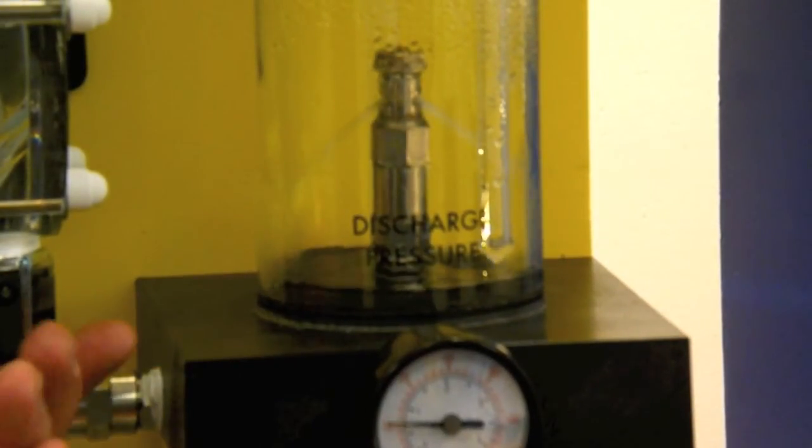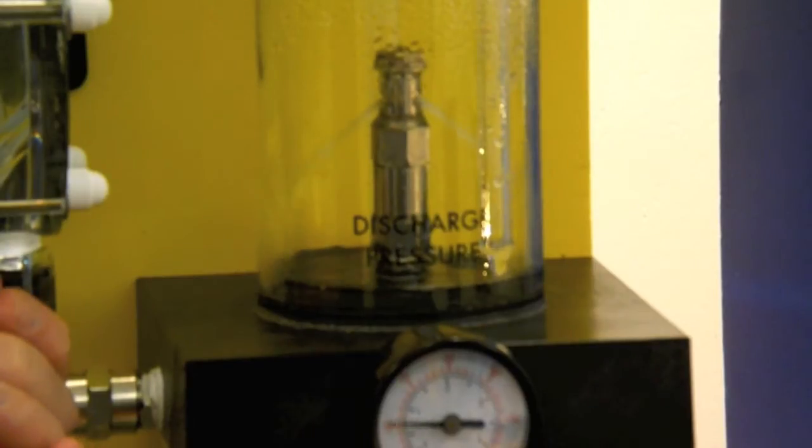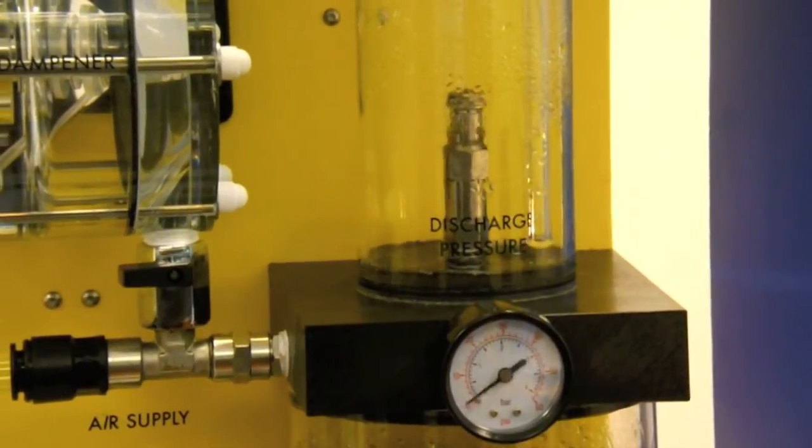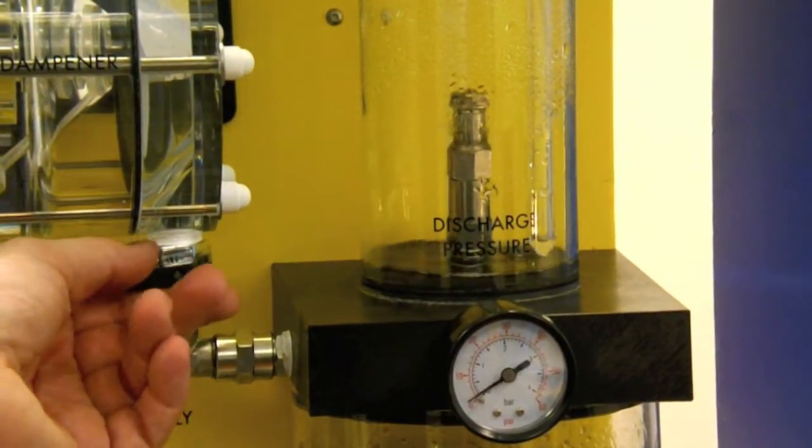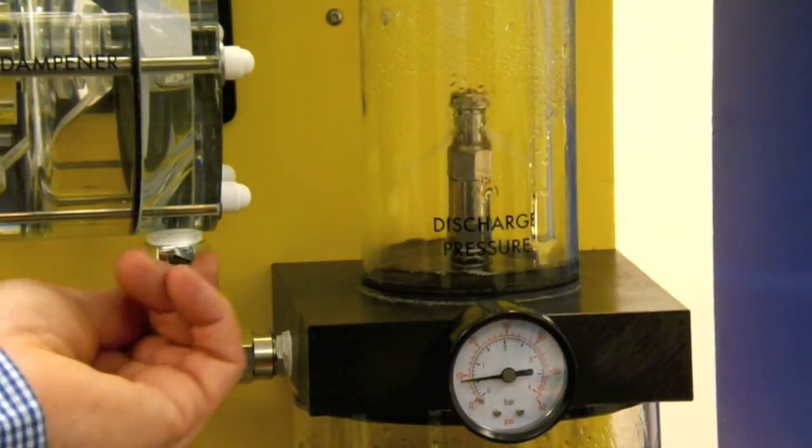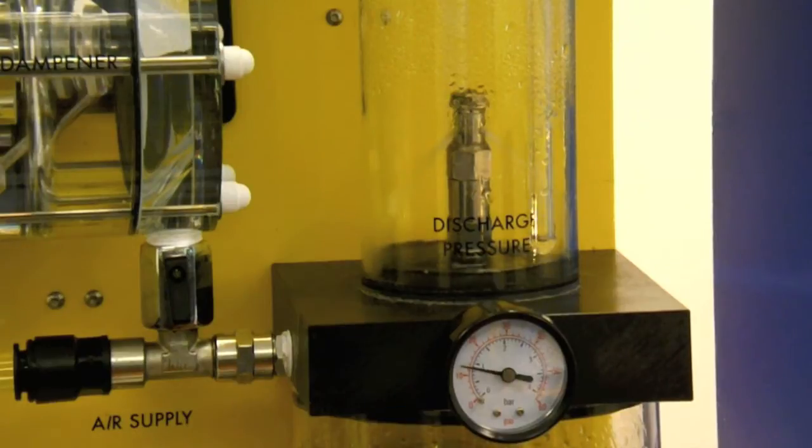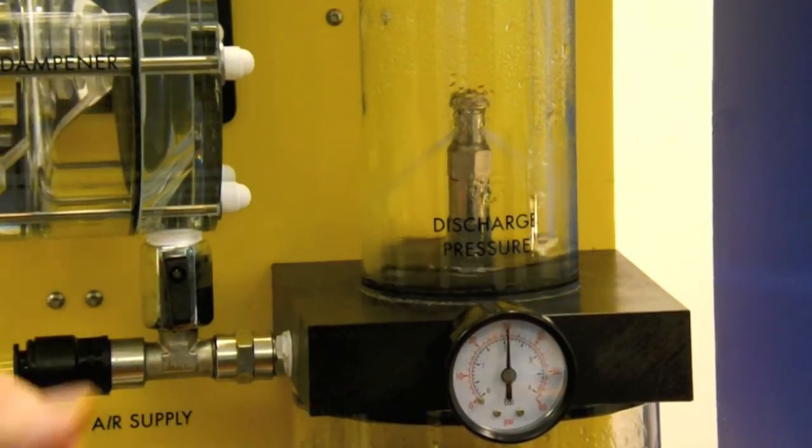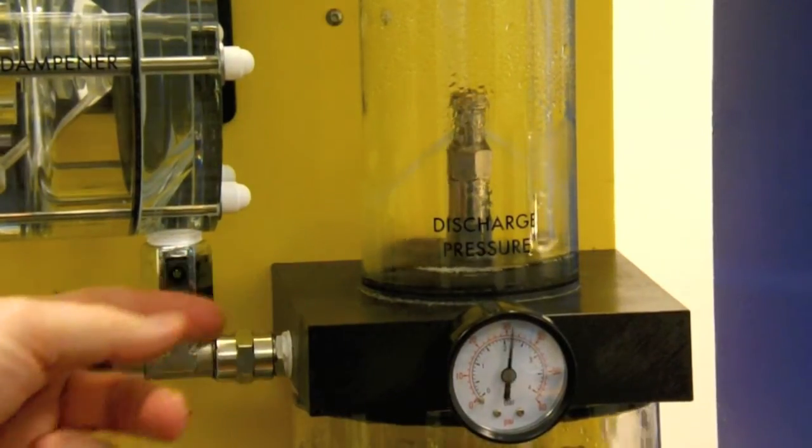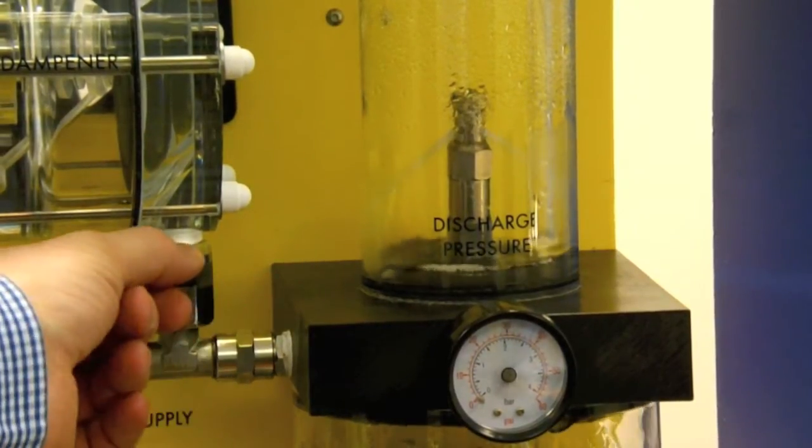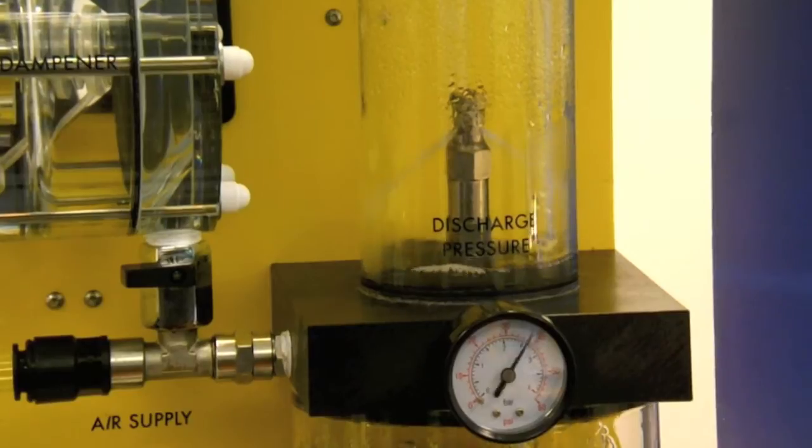So if I close the valve and isolate the damper you will see our pulsation comes back. And if I open up the valve and put the damper back on line our pulse disappears. And this is the same even if we have the pump running quicker. You can see with the pulsation damper on we have a nice smooth flow. With the damper off we have our pulsation back in it.